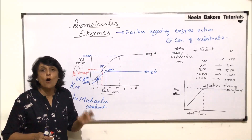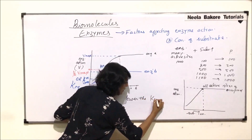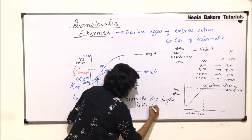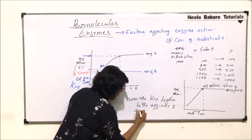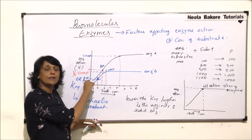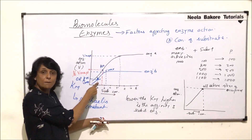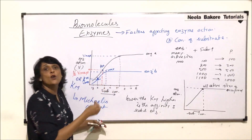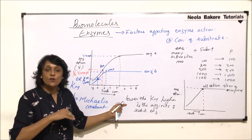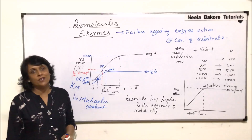Sooner the sites get half full, higher is the affinity. Therefore, lower the Michaelis constant, higher is the affinity of the substrate and enzyme. Out of these two, enzyme B has a lower Michaelis constant — meaning enzyme B and its substrate have higher affinity. Enzyme A has a higher Michaelis constant and comparatively lower affinity towards its substrate. Lower Michaelis constant means higher affinity; higher Michaelis constant means lower affinity. Such graphical interpretation questions are commonly asked in competitive exams.